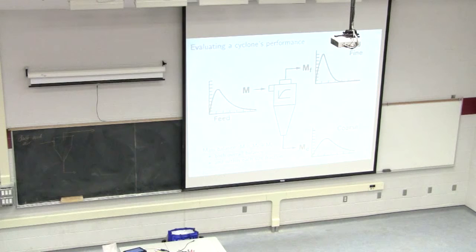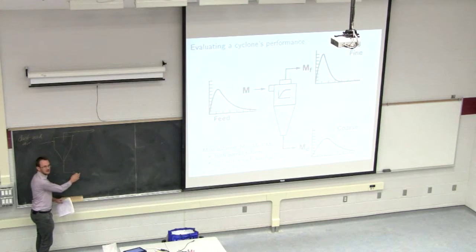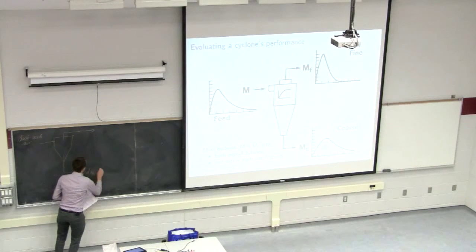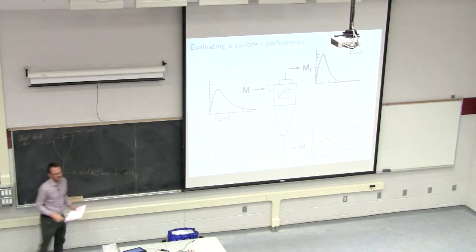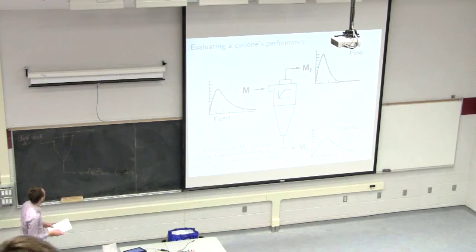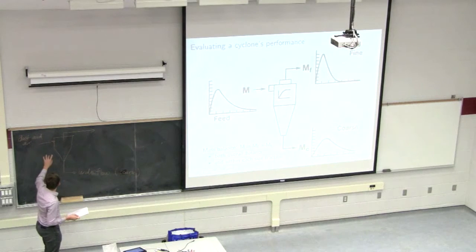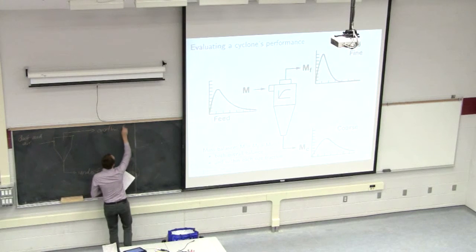Where would most of the weight or mass of the dust report to? Let's use the correct names. The stream out here is called the underflow — we'll sometimes see the term coarse stream. Please don't refer to them as top and bottom because this unit can operate in any orientation. The overflow stream is over here, and sometimes that's called the fines.